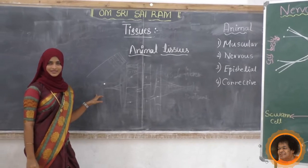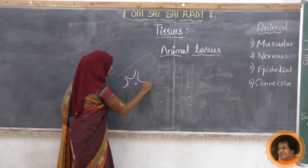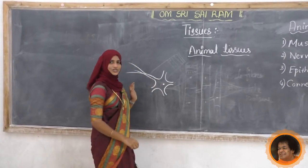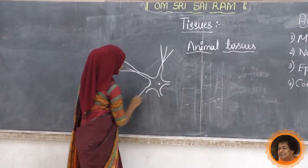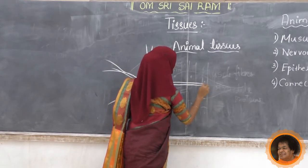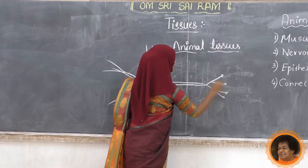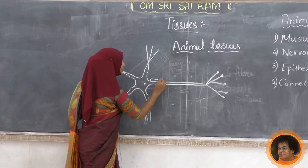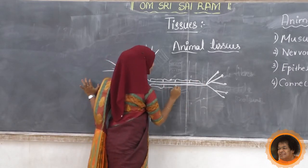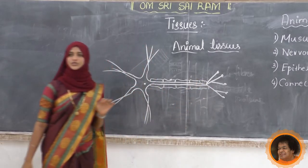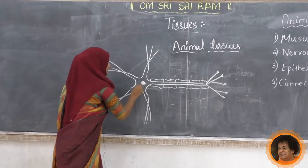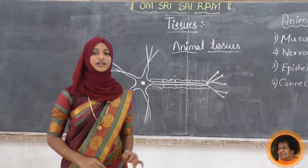First, draw a nucleus at the center and draw the cytoplasm around it. After that, draw small hair-like structures - those are dendrites. Leave one end for the axon - elongate that and draw the nerve ending. Then draw the myelin sheath and Schwann cells. Label all the parts - nucleus at the center. This is all about nervous tissue.